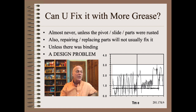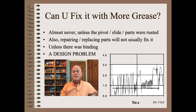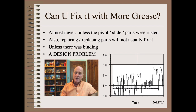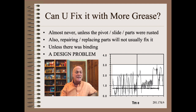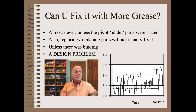Some of you are probably wondering: can I fix the friction by adding more grease? The answer is almost never, unless the pivot, slide, or part were rusted. Also, repairing or replacing parts will not usually fix it, unless there was some noticeable binding such as due to severe misalignment. The reason that you seldom can fix this problem in the field is because this is a design problem, not a maintenance or operation problem, at least in most cases.